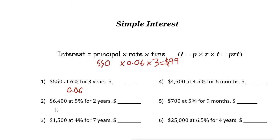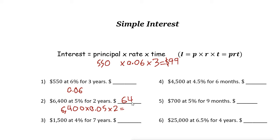The next example: six thousand four hundred dollars at five percent — that's 0.05 — times two years. Use your calculator: six thousand four hundred times 0.05 times two. The answer is six hundred forty dollars.